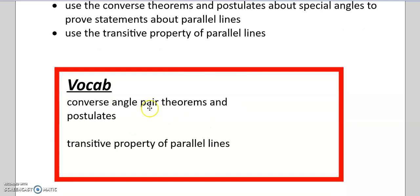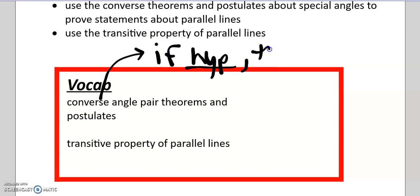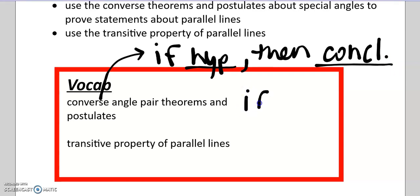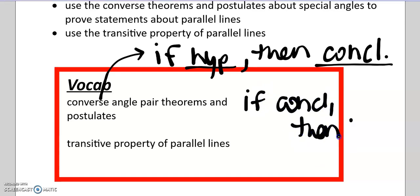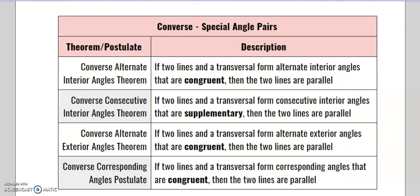Our vocab has to do with the Converse Angle Pair Theorems and Postulates. Let's just review — what is a Converse? Do we remember from chapter 2? A conditional statement has if, then the hypothesis, then the conclusion. The Converse is when we switch that conclusion and the hypothesis. So then we have: if the conclusion happens, then the hypothesis. The Converse flips around the conditional statement, and that is going to appear when we look at these theorems.